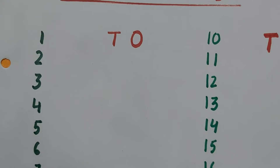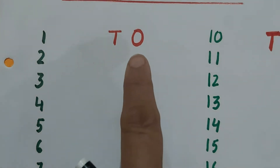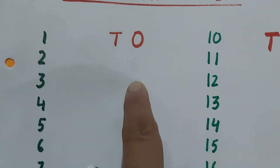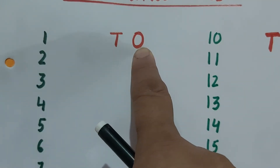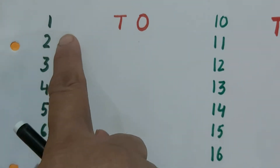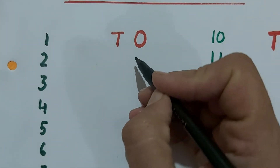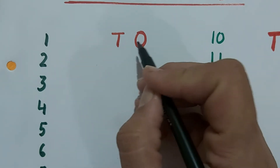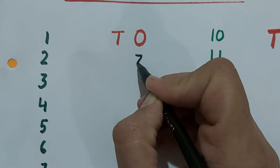Whenever we have a single digit — one number, not double — we write that single digit under ones. O for ones. We write under O, ones, the numbers 1 to 9. Suppose I have to write 3 — it is a single digit, so we will write it under ones.